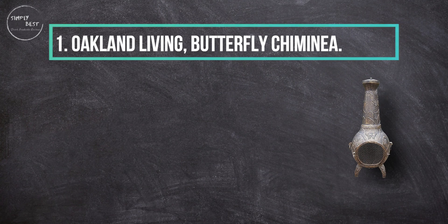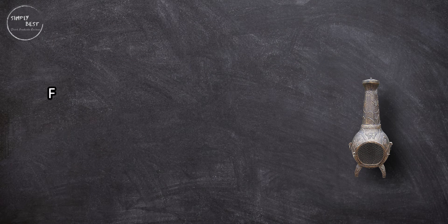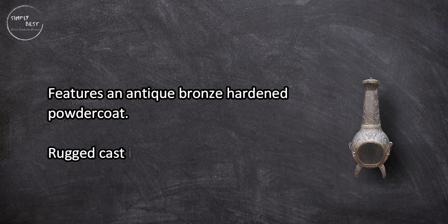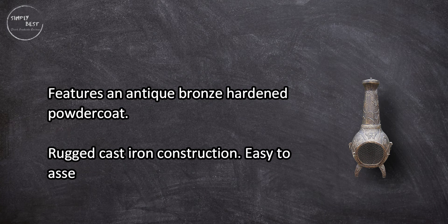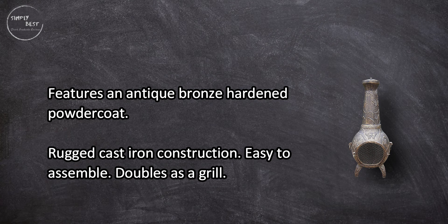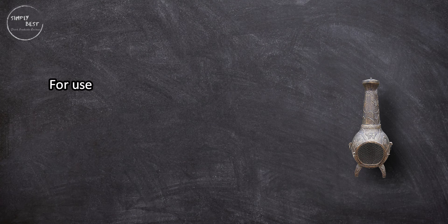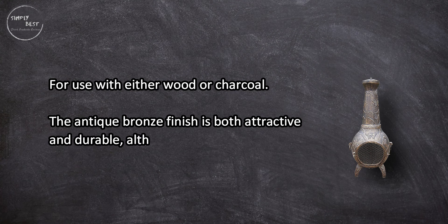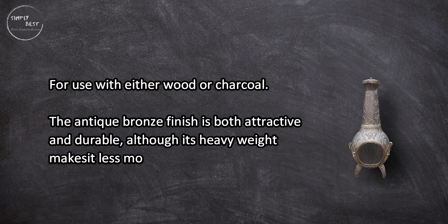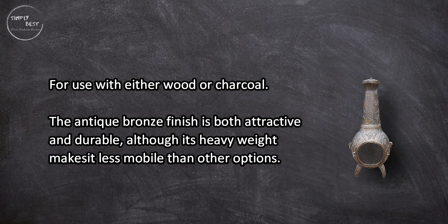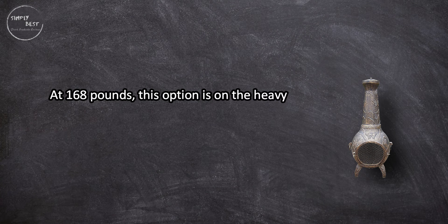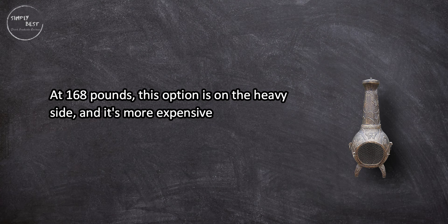At number one, Oakland Living Butterfly Chimenea features an antique bronze hardened powder coat, rugged cast iron construction, easy to assemble, and doubles as a grill for use with either wood or charcoal. The antique bronze finish is both attractive and durable, although its heavy weight makes it less mobile than other options. At 168 pounds, this option is on the heavy side and is more expensive than other models.